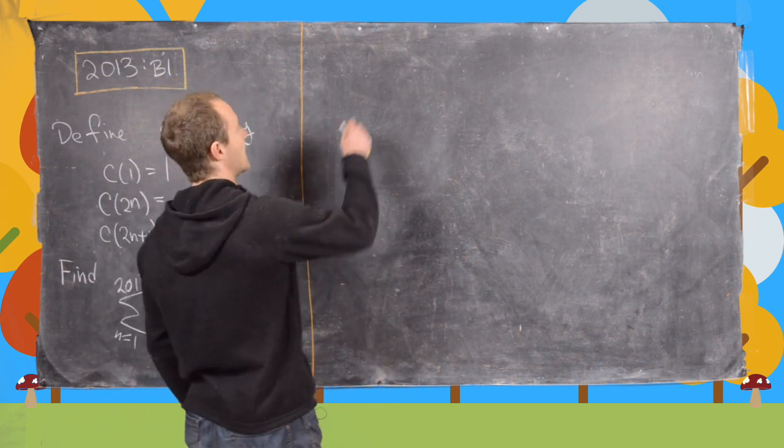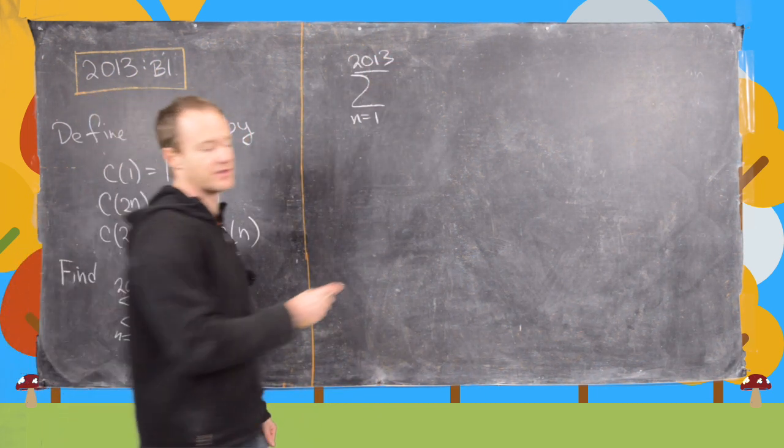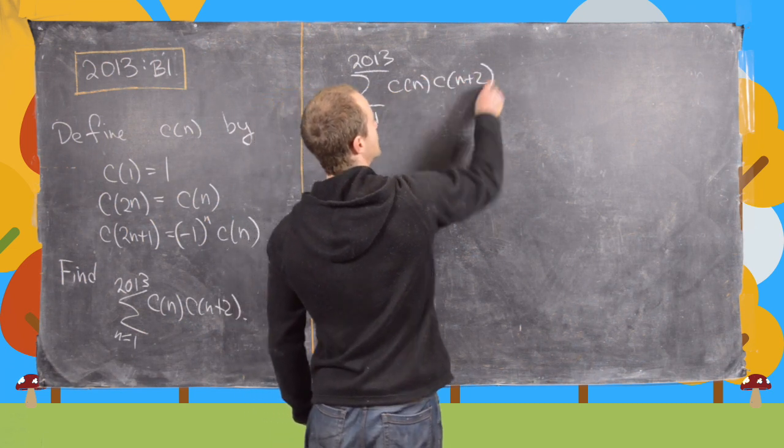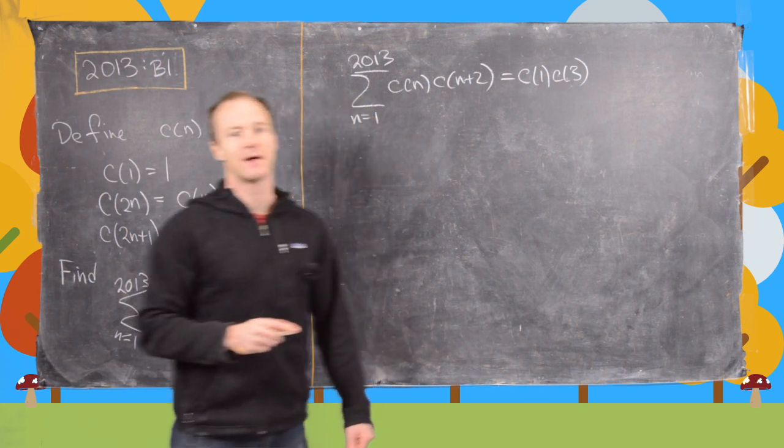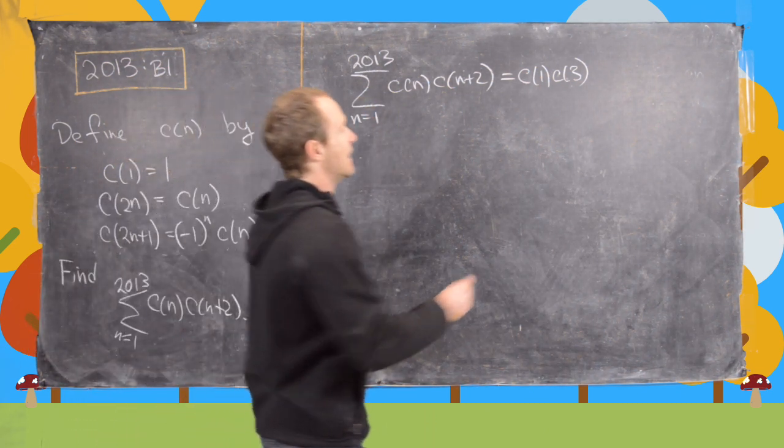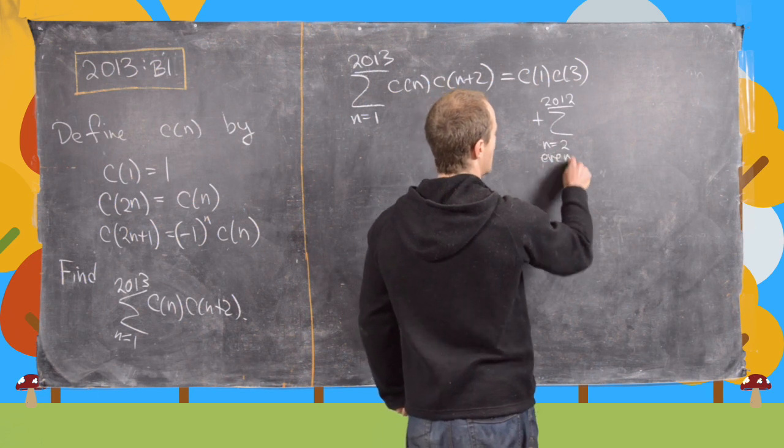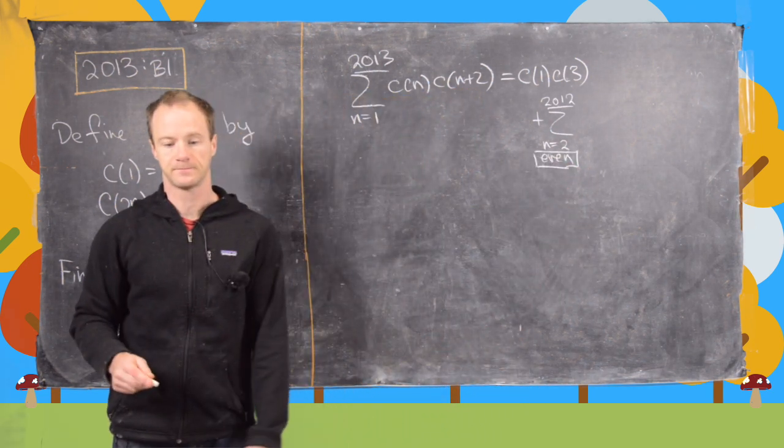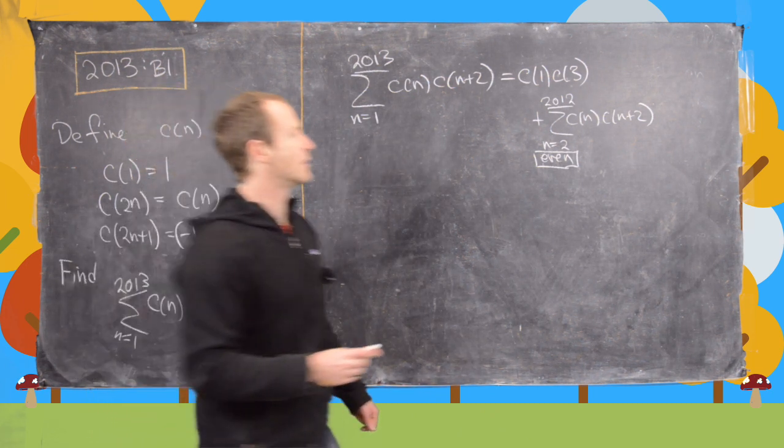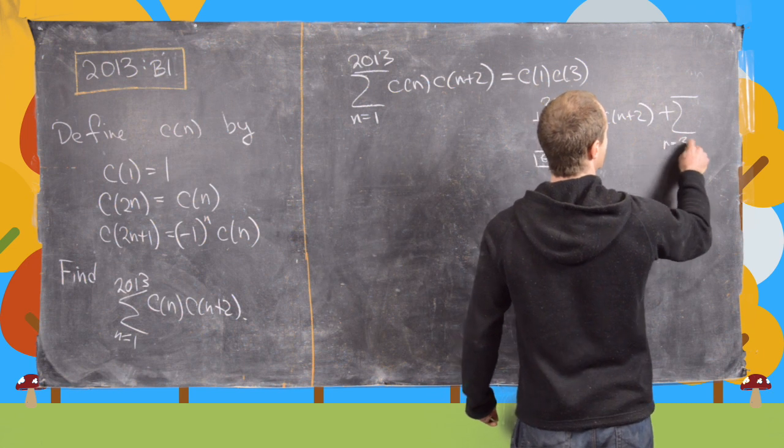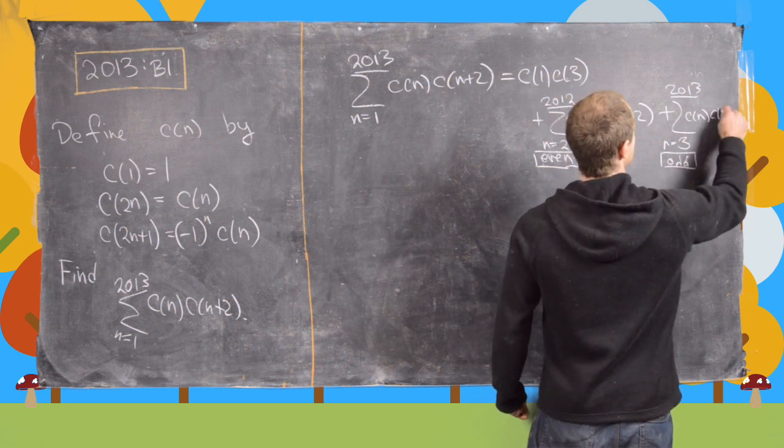So now motivated from what we saw on the last board, we're going to take this goal sum, which is the sum from n equals 1 to 2013 of c_n times c_(n+2). We're going to take out the very first term, so that's going to be c_1 times c_3. And recall, that number was negative 1. And then plus the sum n equals 2 to 2012 over all of just the even numbers, and then we're just going to write this as c_n, c_(n+2). And now we have this is plus the sum n equals 3 to 2013 over all of the odd numbers of c_n, c_(n+2).